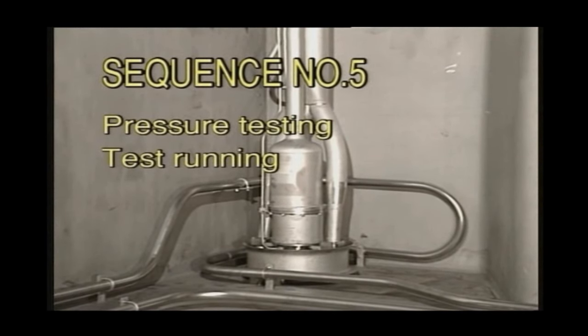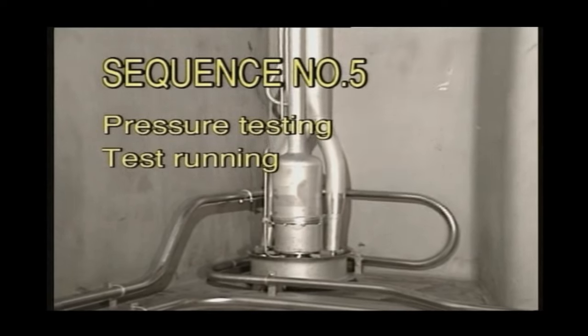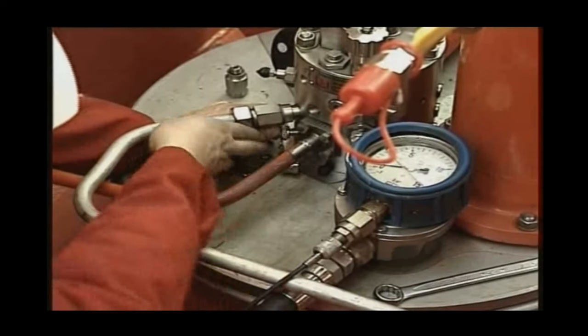Sequence number five: Pressure testing and test running. After the assembling job is finished, visually check the cargo pump and the cargo tank. No rags or other components must be left in the cargo tank.